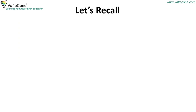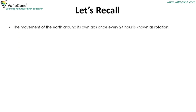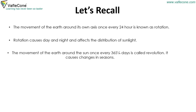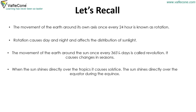Now let's recall. The movement of the Earth around its own axis once every 24 hours is known as rotation. Rotation causes day and night and affects the distribution of sunlight. The movement of the Earth around the sun once every 365 and one-fourth days is called revolution, and it causes changes in seasons. When the sun shines directly over the tropics, it causes a solstice. The sun shines directly over the equator during the equinox.